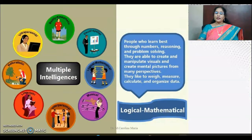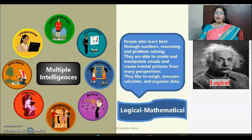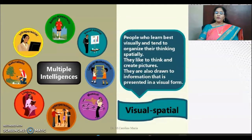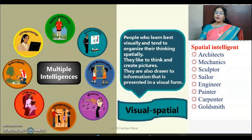Logical-mathematical intelligent people learn best through numbers, reasoning, and problem solving. They are able to create and manipulate visuals and create mental pictures from many perspectives. They are likely to weigh, measure, calculate, and organize data. Examples are Ramanujan and Einstein. Visual-spatial intelligent people learn best visually and tend to organize their thinking spatially. They like to think and create pictures and are drawn to information presented in visual form. Examples include architects, mechanics, sculptors, sailors, engineers, painters, carpenters, and goldsmiths.